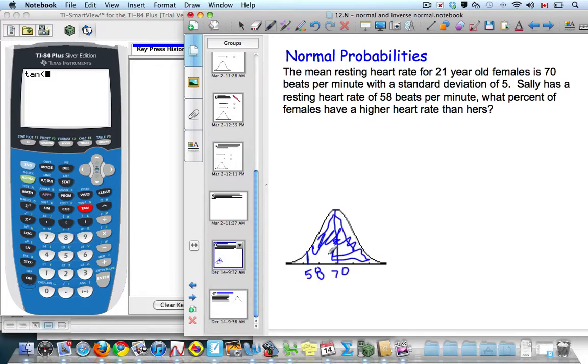Our calculator speaks in z-scores, though. So in order to find our z-score, we know that z equals 58 minus 70 over 5.